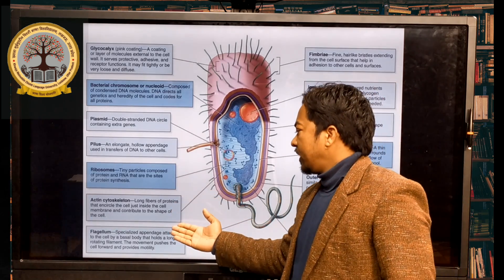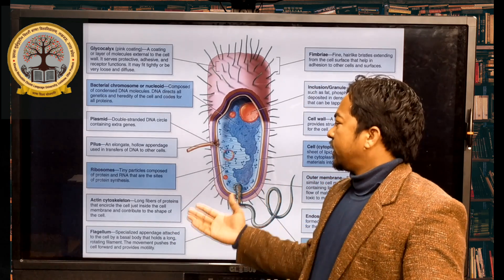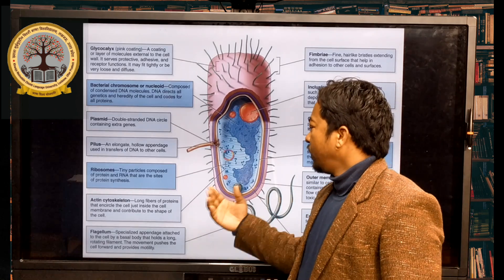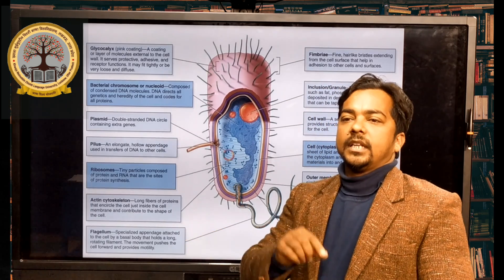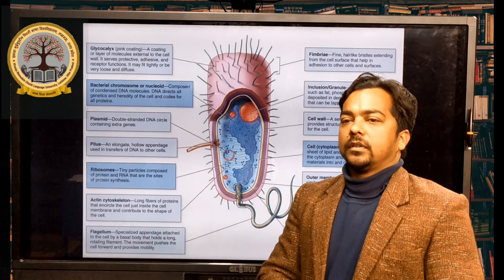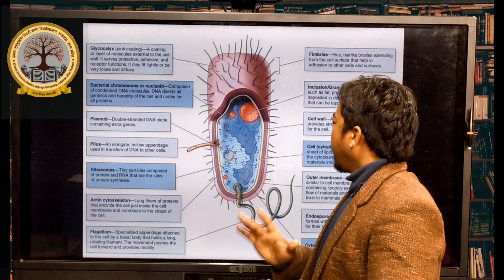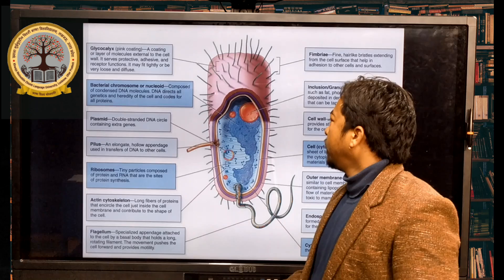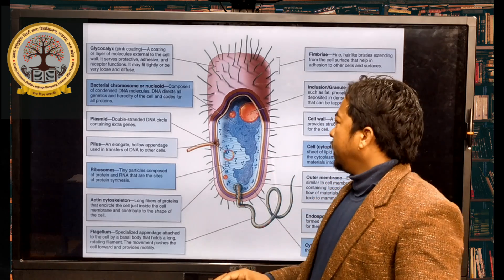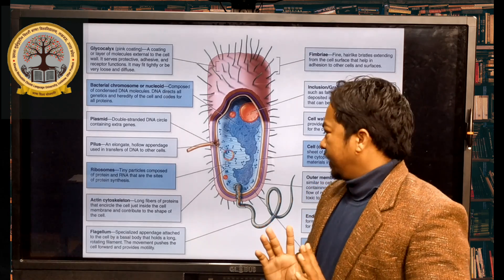Actin cytoskeleton is known as cytoskeleton. Flagellum, fimbriae, and pili are the motility organs of bacteria. These are found in different types of bacteria — not all structures are commonly found in all bacteria.